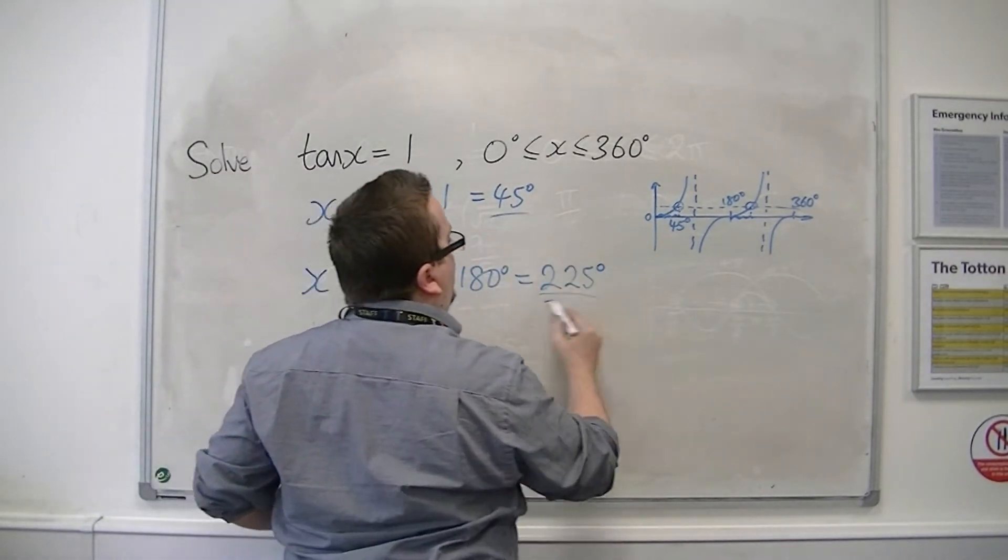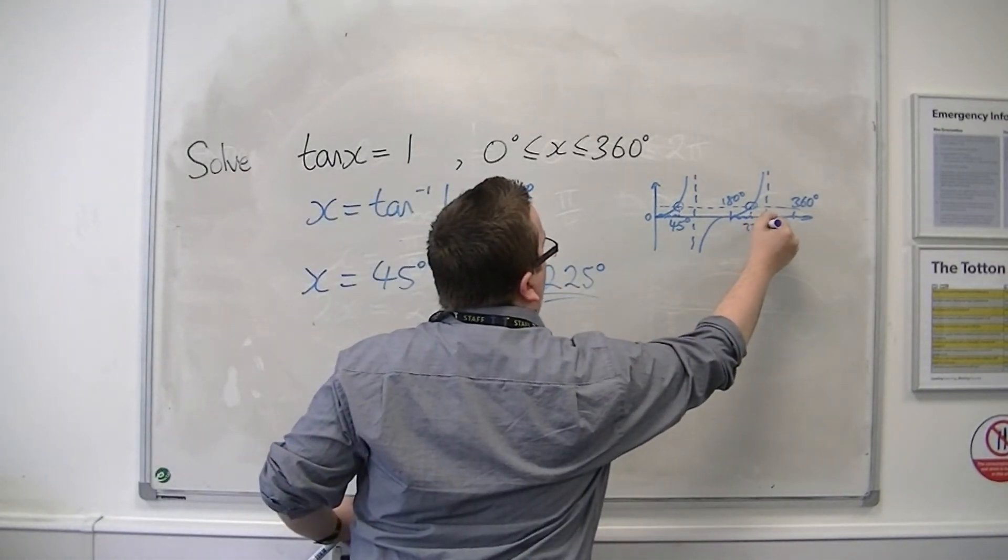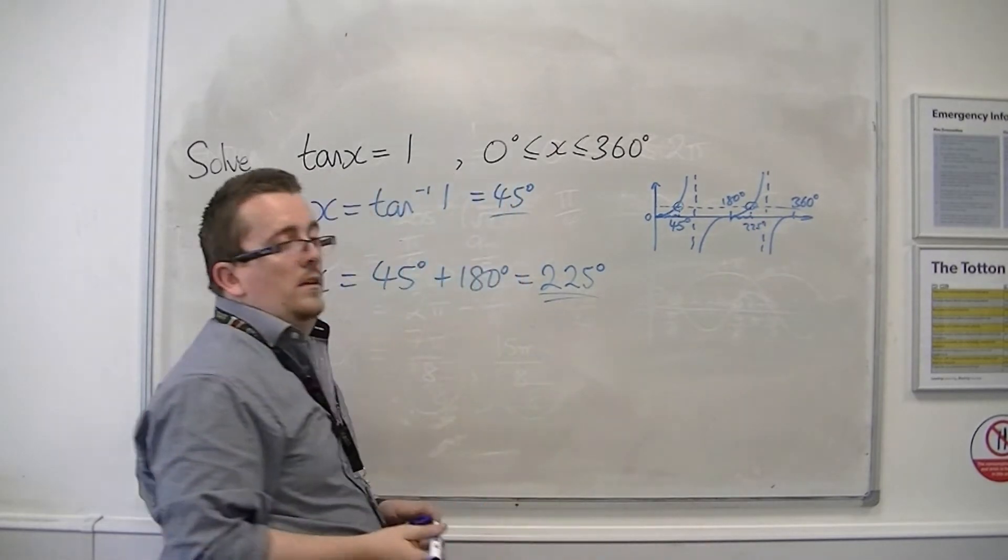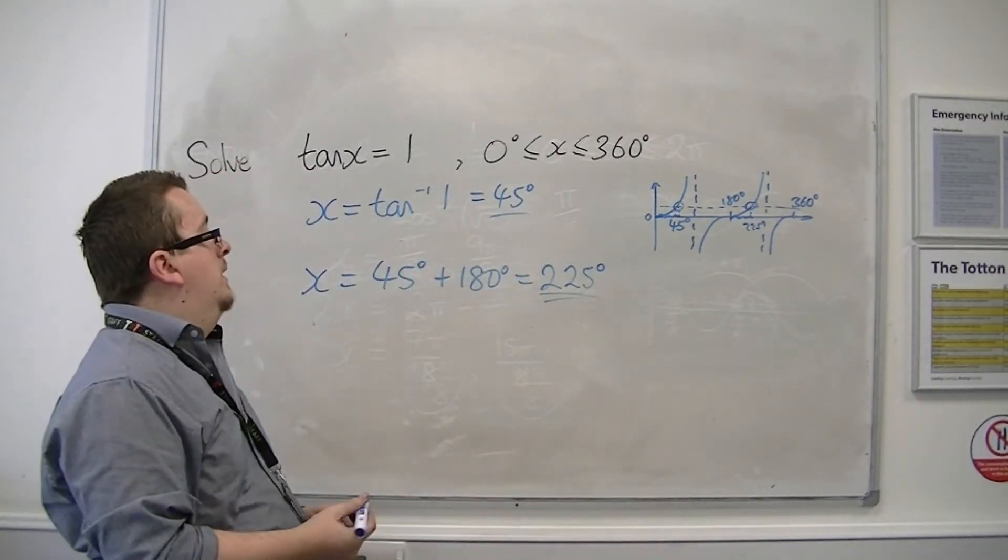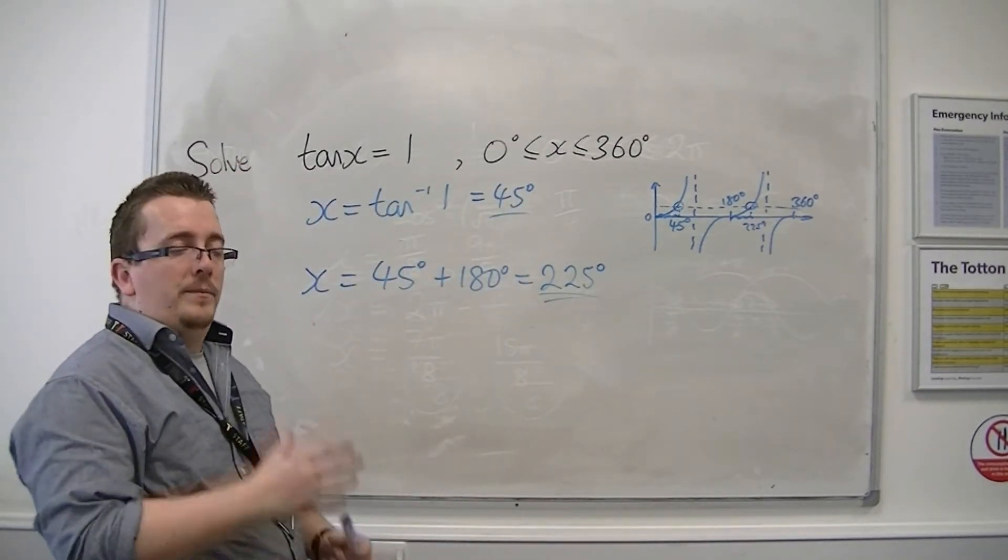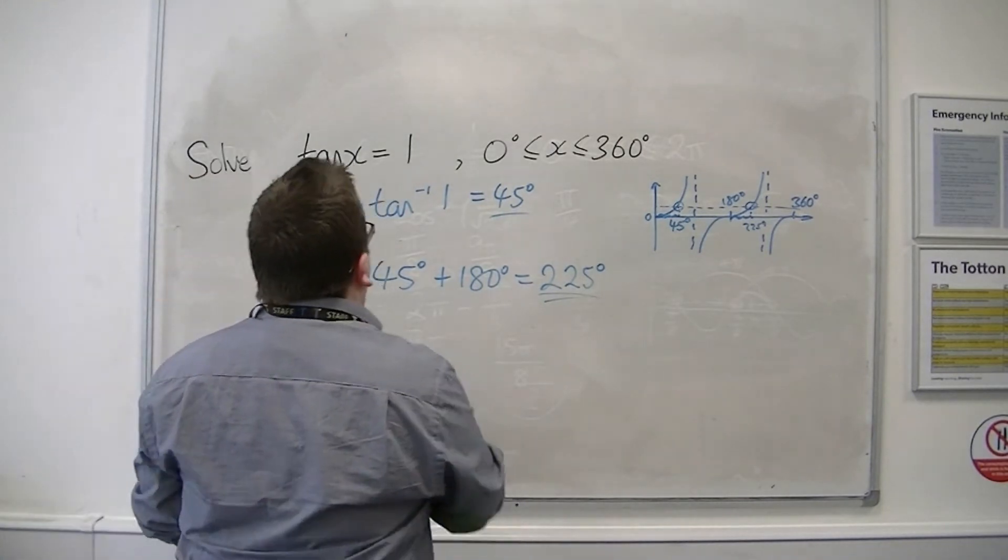And so I've got these two solutions, 45 and 225. And that's tan. It's quite a simple one to solve with. So let's look at a more complicated example.